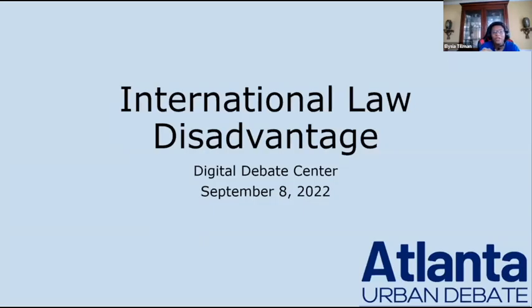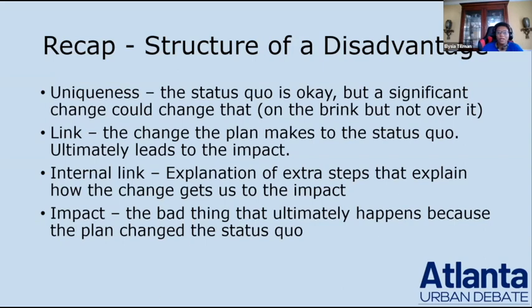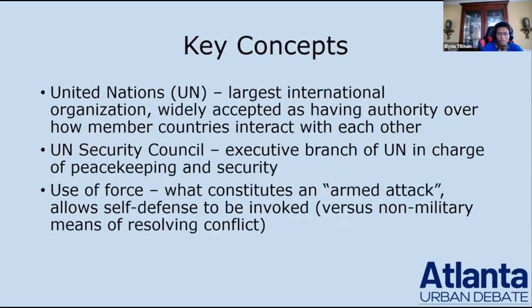Now we're going to talk about the international law disadvantage, which is specific to the cyber affirmative. Just a quick recap of disadvantage structure: the uniqueness defines the current status quo and says it's okay as long as we don't change things. The link says the plan changes things — that's not good. The internal link explains how that change leads to a bad outcome, and the impact is the bad thing that ultimately happens. For this disadvantage, you have a unique-link in one piece of evidence, another link card, the internal link, and the impact — so there's no standalone uniqueness evidence, but it is in there.